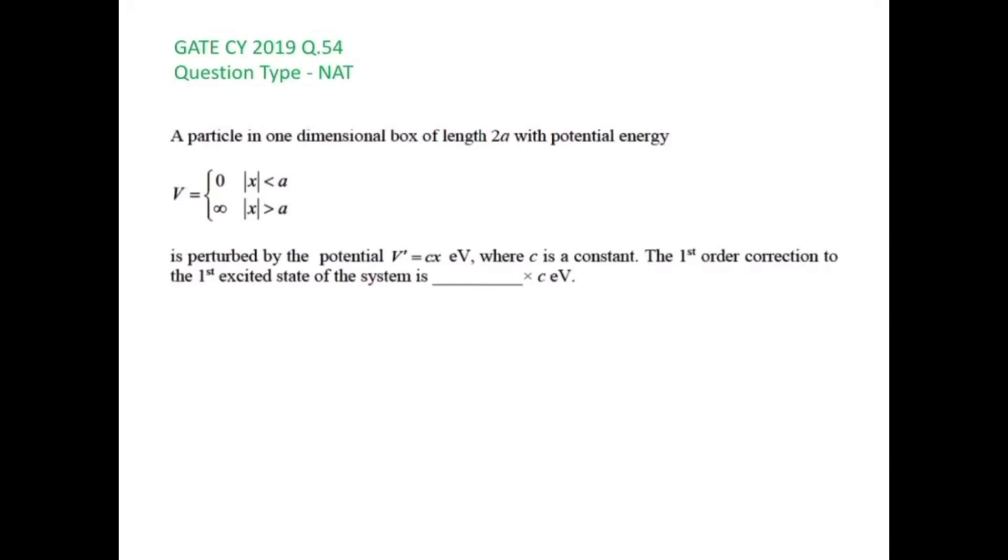Hello everyone, today we are going to solve a GATE CY question which is a numerical answer type question which appeared in the year 2019 in question number 54. The question reads as follows: a particle in one dimensional box of length 2a with a potential energy V equals zero when mod x is less than a.